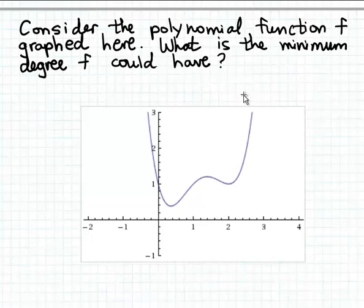In this example we're shown the graph of a polynomial function, but we're not shown the formula for this function. What we want to determine is what's the minimum degree this polynomial function can have just by observing the graph.